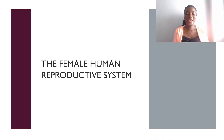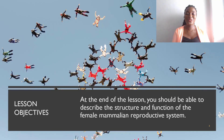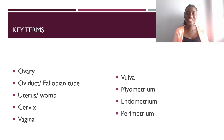Hello class, welcome to another lesson in biology. Today we'll be looking at the female reproductive system in humans. I'm Miss Eugenia Jerminza. By the end of the lesson, you should be able to describe the structure and function of the female mammalian reproductive system. Our key terms are: ovary, oviduct (also known as the fallopian tube), uterus (also known as the womb), cervix, vagina, vulva, myometrium, endometrium, and perimetrium.